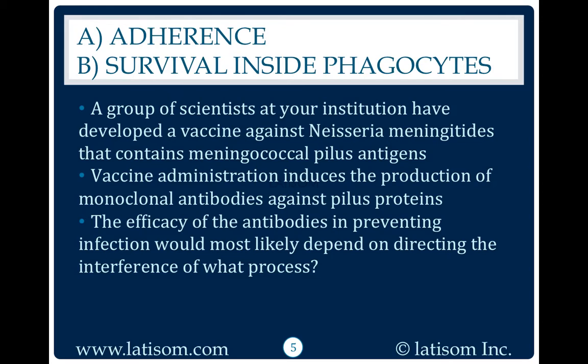A group of scientists at your institution have developed a vaccine against Neisseria meningitidis that contains meningococcal pilus antigens. Vaccine administration induces the production of monoclonal antibodies against pilus proteins. The efficacy of the antibodies in preventing infection would most likely depend on directing the interference of what process?